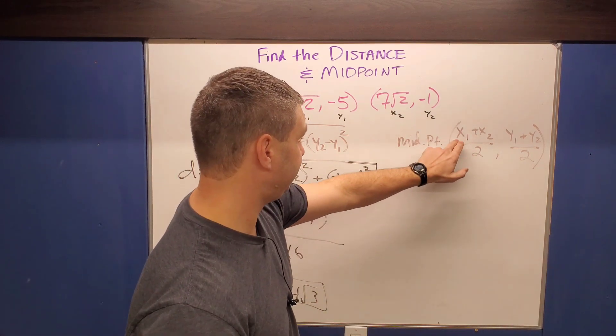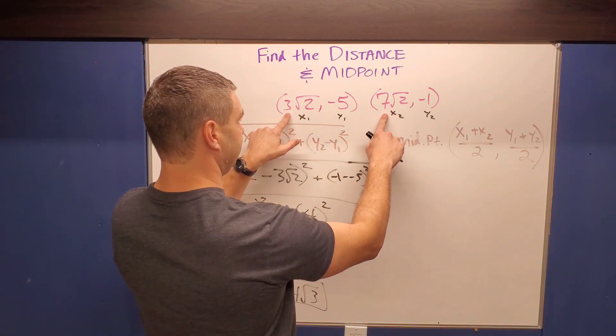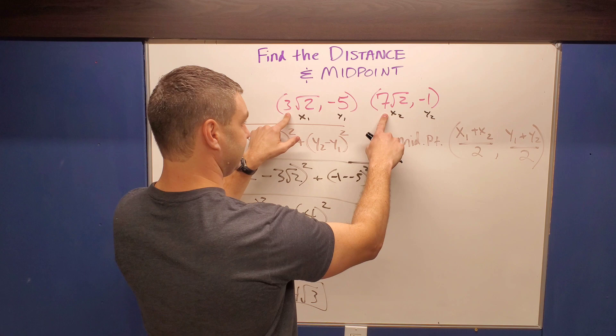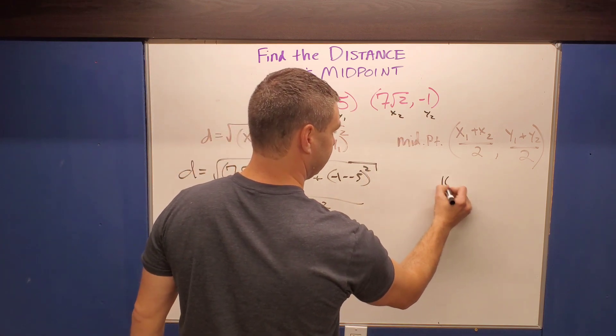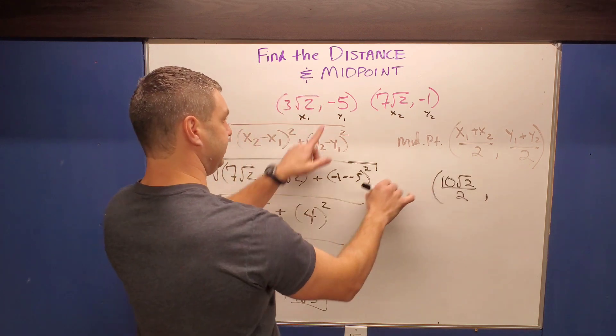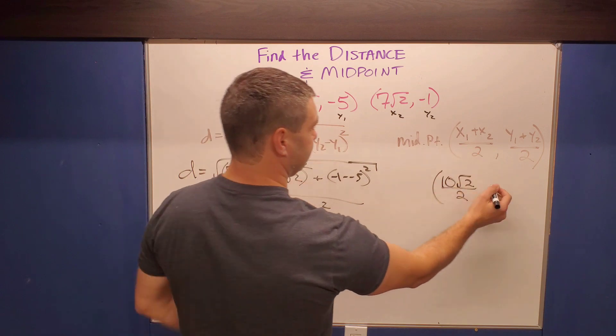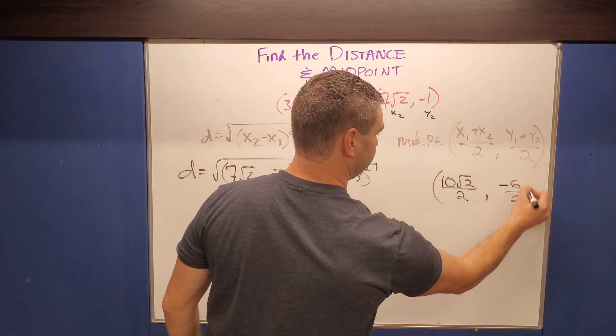And so if I look at my two X's here, X one and X two, well, seven and three, if I add those together, that's 10. So let's maybe do that. 10 square roots of two over two. And same thing for the Y's, negative five and a negative one. And if I add those together, that's gonna be a negative six over two.